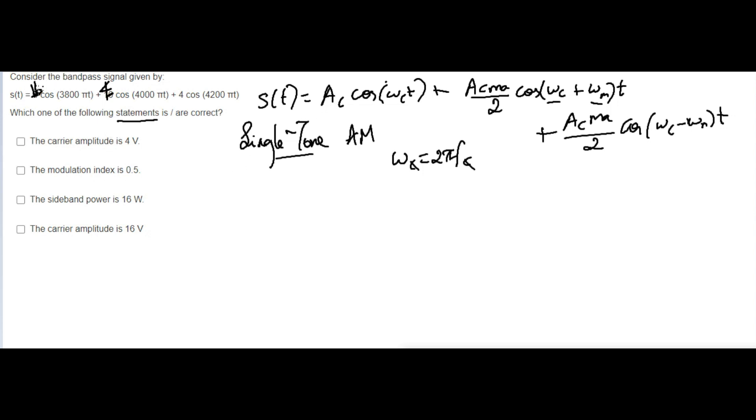So from the first, listen here, this question is 16 and this is 4. When you compare, I'll just write once again here: 16cos(3800πt) plus 4cos(4000πt) plus 4cos(4200πt). So when you compare this one...